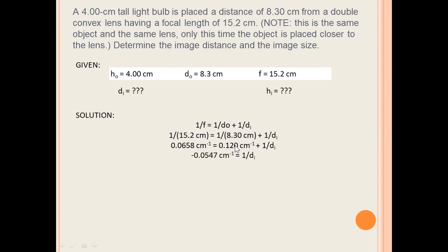Transposing the reciprocal of the object distance to the left side of the equation gives us negative 0.0547 per cm, which equals the reciprocal of the image distance. Manipulating the values gives us the final answer for the image distance at negative 18.3 cm.